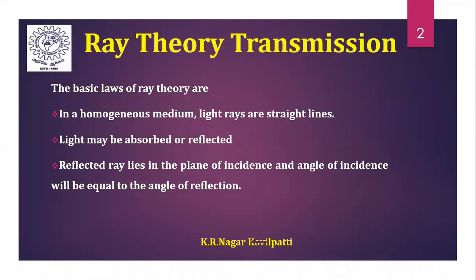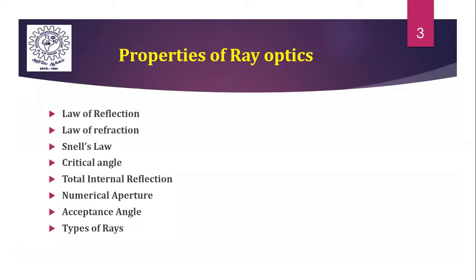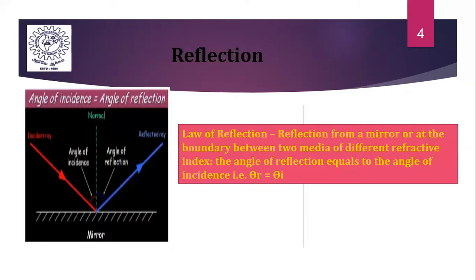A ray is a part of light and in a homogeneous medium it is a straight line. The homogeneous medium means it has uniform properties throughout its volume, that is without any irregularities. In this session I will be discussing about the properties of ray optics: law of reflection, law of refraction, Snell's law,